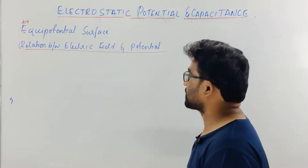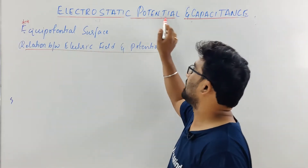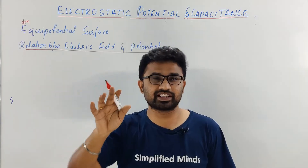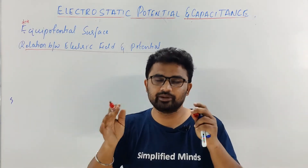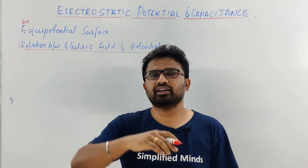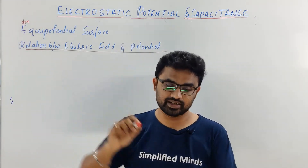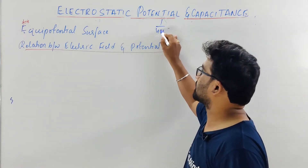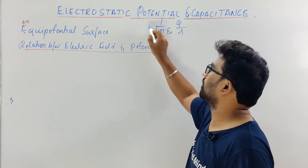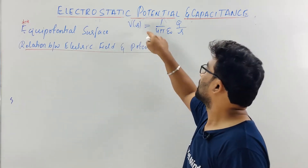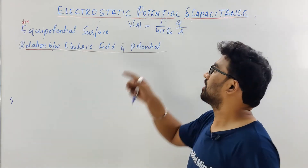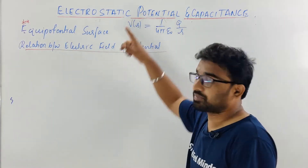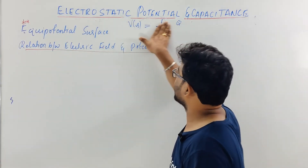So let's start with Electrostatic Potential. In the previous lecture, I already explained what is the meaning of Electrostatic Potential — I took almost 15 minutes to explain it because the concept is very important. I also derived expressions due to point charge. We discussed the potential at distance R and also the potential due to a system of charges. So you have to watch the previous lecture, understand everything, then come to this lecture.